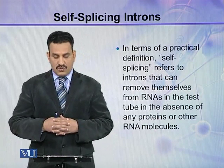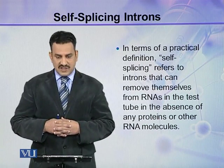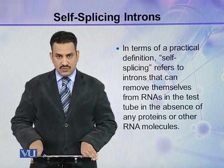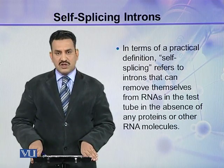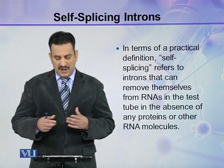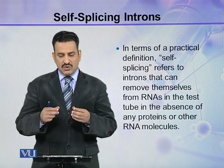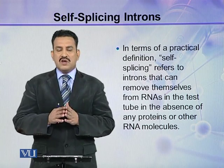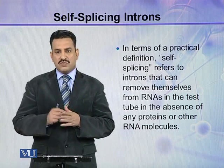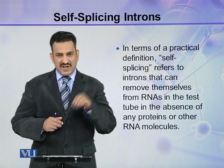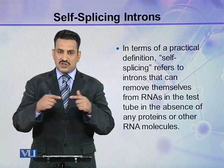In terms of a practical definition, self-splicing refers to introns that can remove themselves from RNAs in the test tube in the absence of any proteins or other RNA molecules. So self-splicing means that if we put the pre-mRNA in a test tube without adding any additional factor or protein, these introns will be self-spliced and will remove themselves from the mRNA.